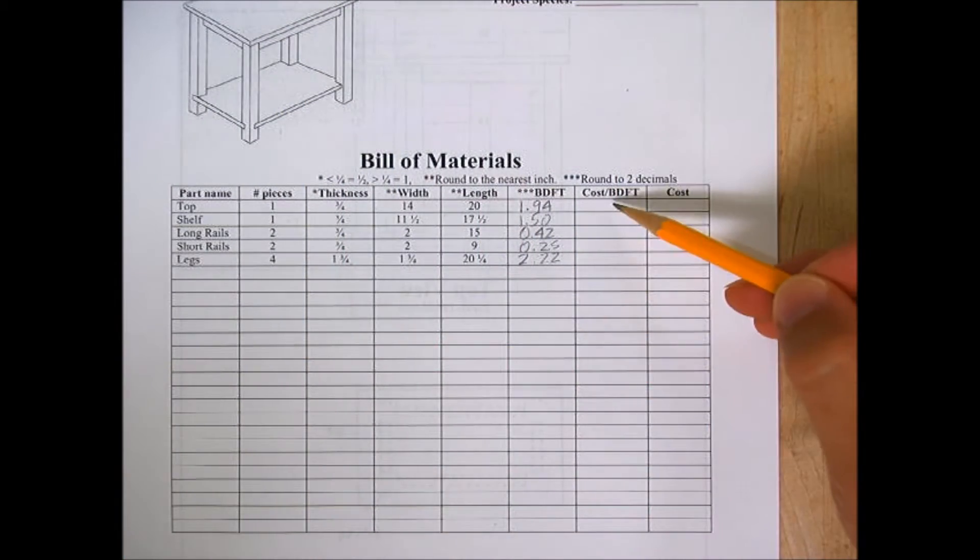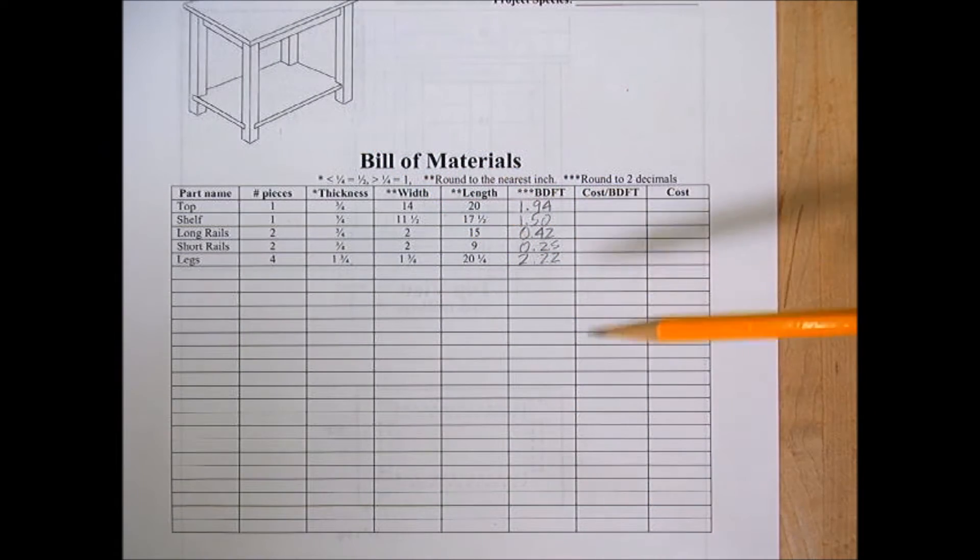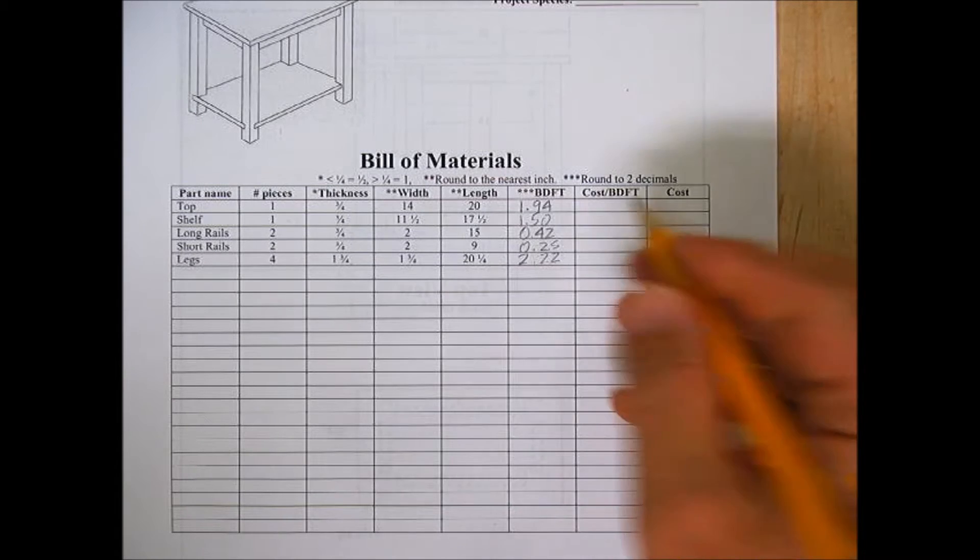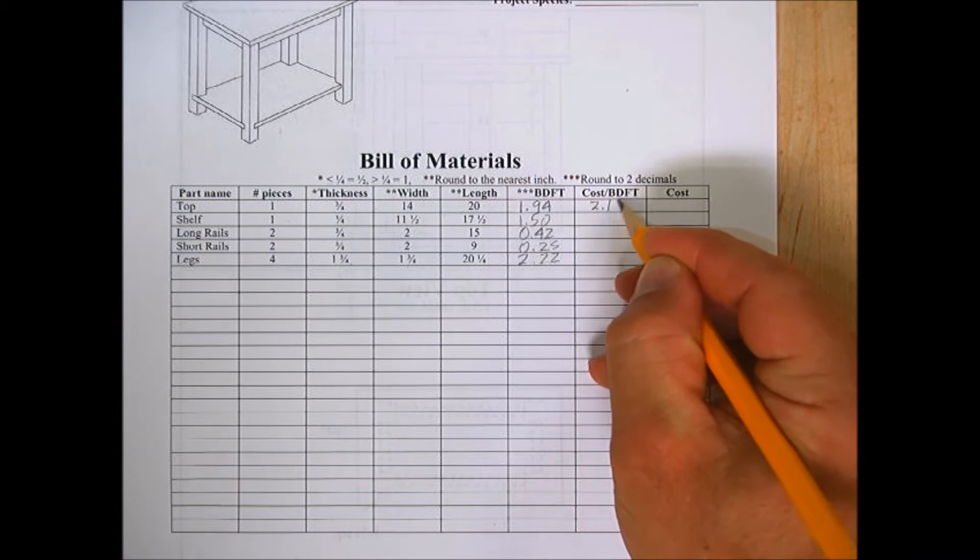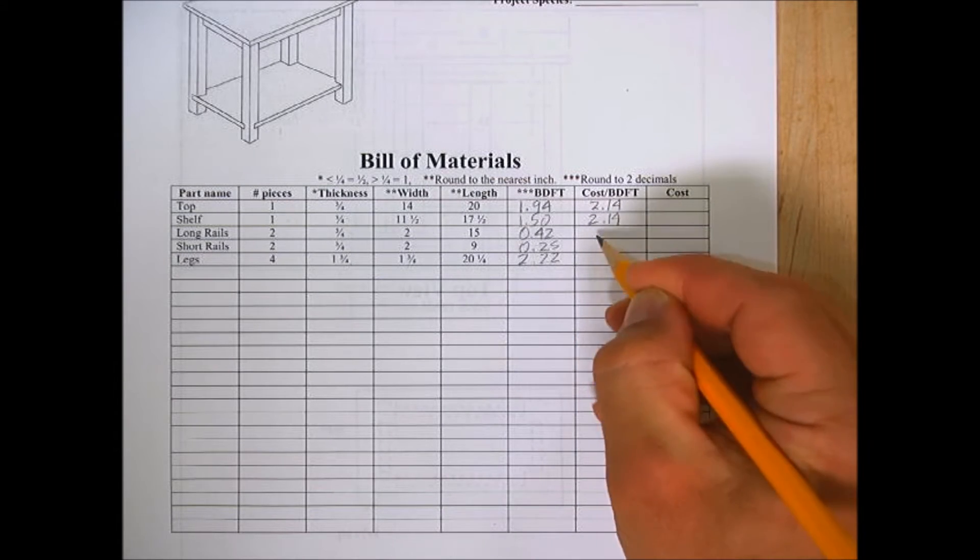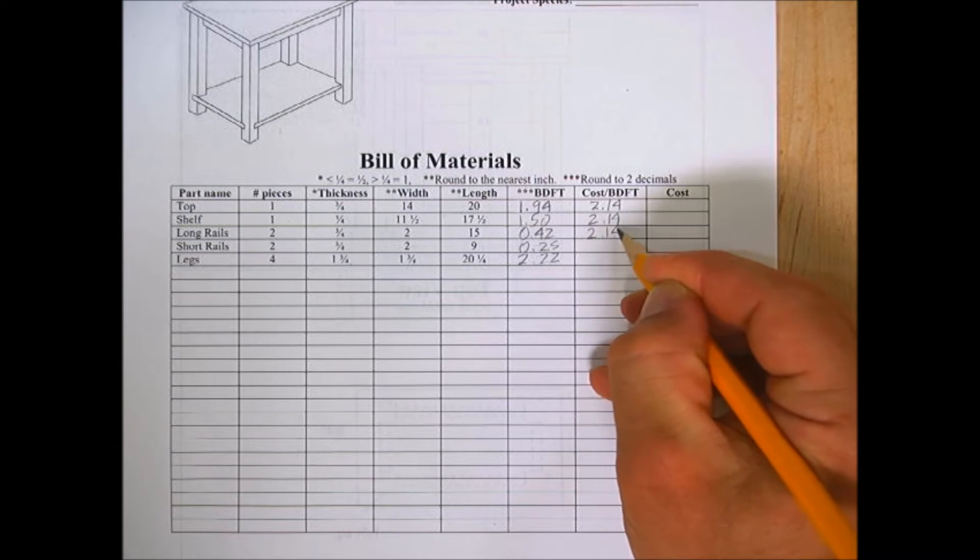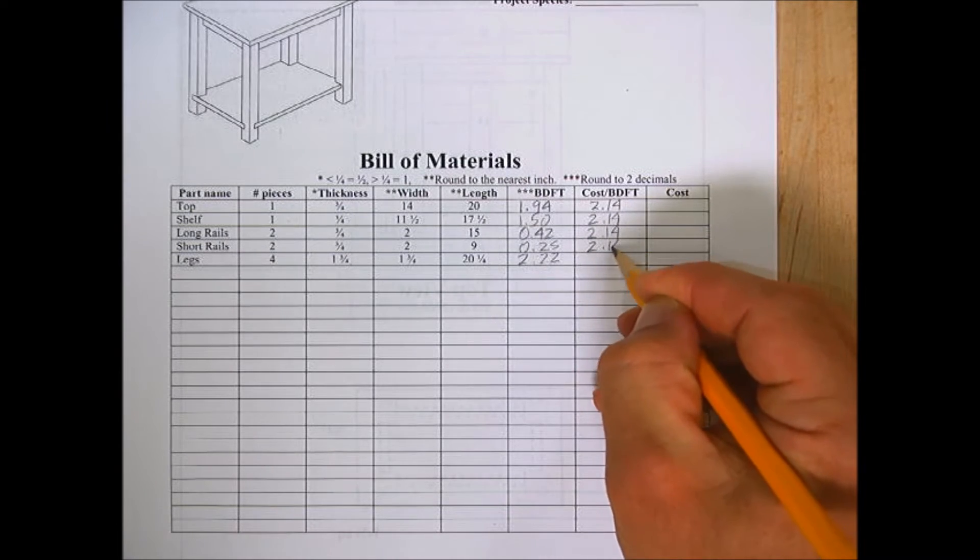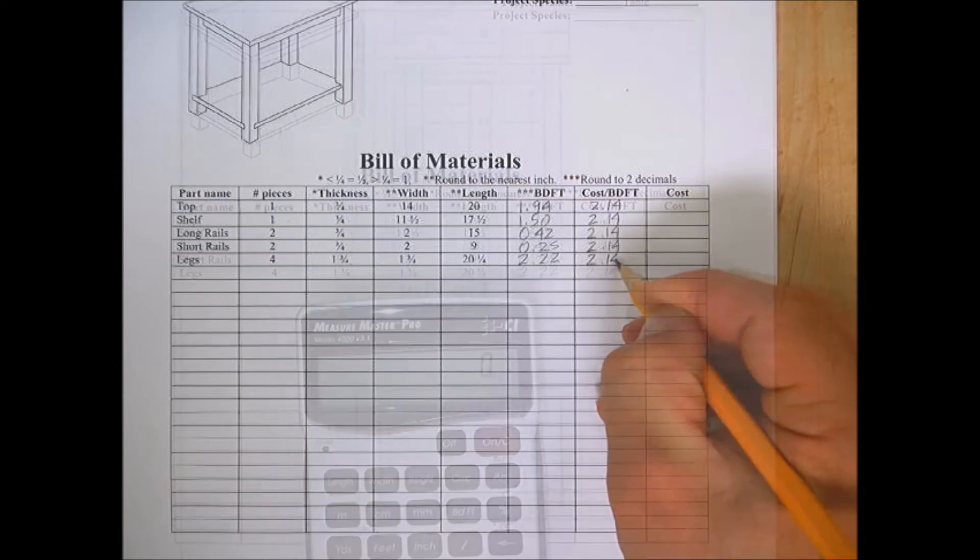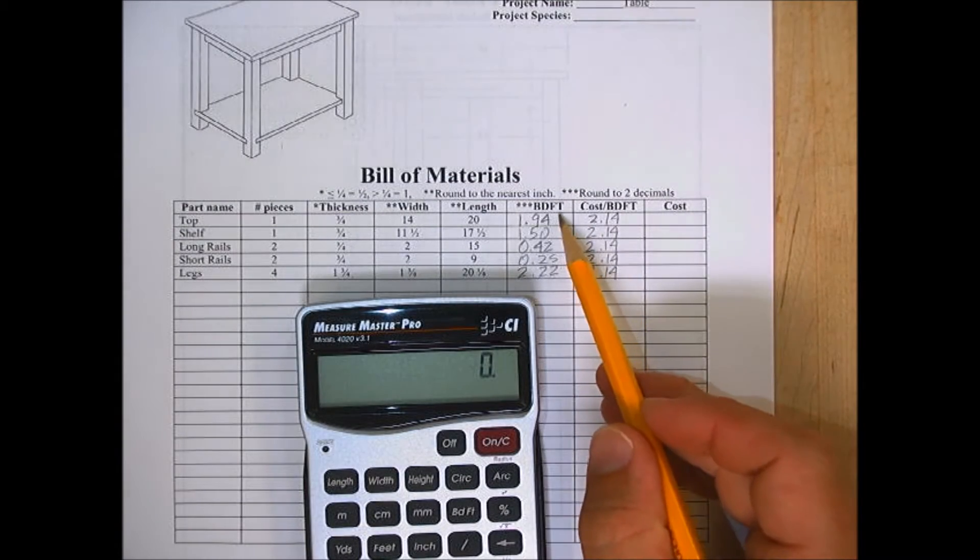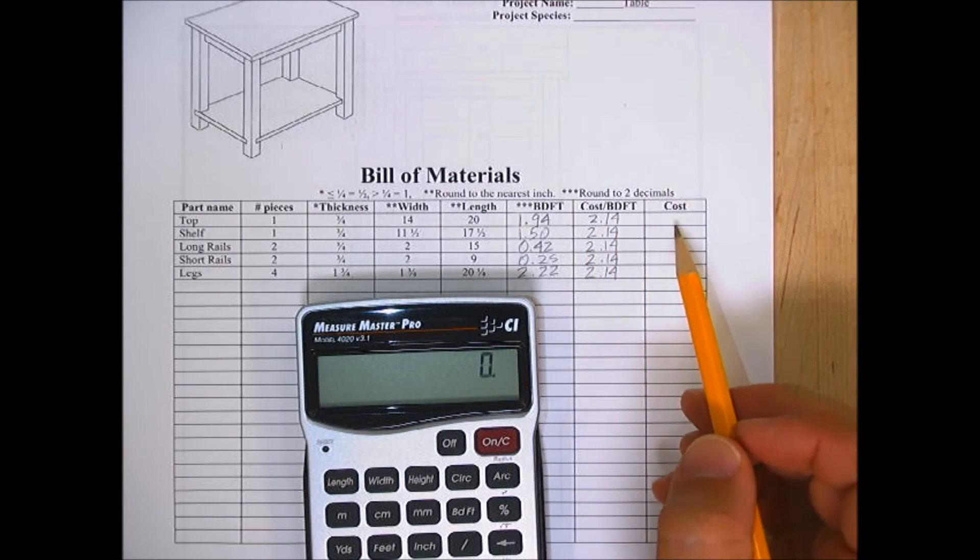So now back to my project. First I need to fill in the cost per board foot column. The table we're going to build is red oak, which right now costs two dollars and fourteen cents per board foot. So I'm going to fill that in for each of these pieces because they're all made of red oak. Next we can multiply board feet times cost per board foot to get our cost.